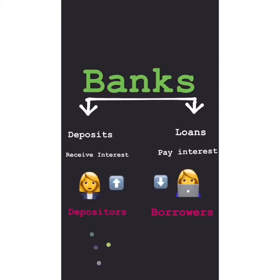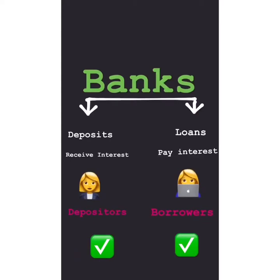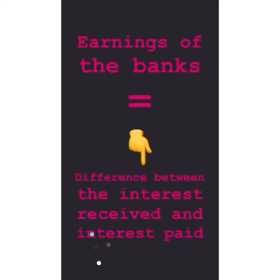Banks generally pay a lesser amount of interest to the ones who deposit money with them, called depositors. And they receive a high amount of interest from the people to whom the banks lend money in the form of loans, called borrowers. So banks charge high interest from borrowers and pay less interest to depositors, and the difference between the rates of interest is the actual income of banks — performing an important function in the economy.